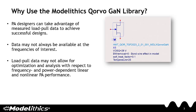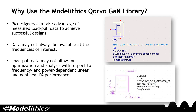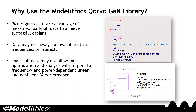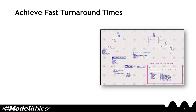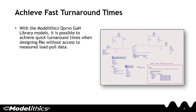It is possible to successfully design PAs by simply utilizing load-pull data. However, the downside is that this data may not always be available at the frequencies of interest, and even when it is available, load-pull data may not allow for optimization and analysis. This is where the ModelLythics Corvo GAN library models come in — they enable designers to achieve quick turnaround times without needing access to load-pull data.